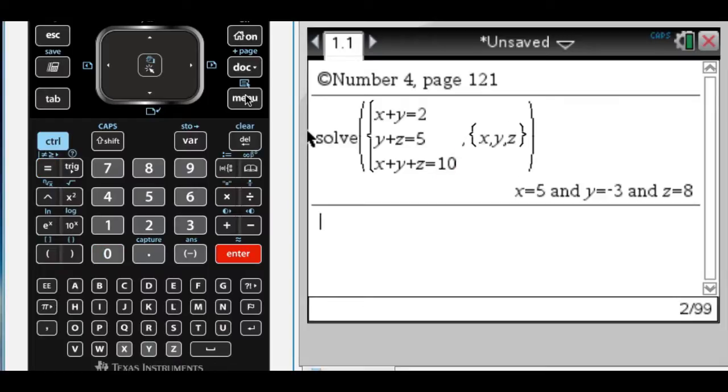It's going to solve for x, y, z. Y is negative 3. That is option A. So we're done with that problem.